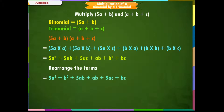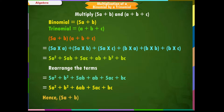Adding like terms: 5ab plus ab equals 6ab. So we get 5a squared plus b squared plus 6ab plus 5ac plus bc. Hence, 5a plus b multiplied by a plus b plus c is equal to 5a squared plus b squared plus 6ab plus 5ac plus bc.